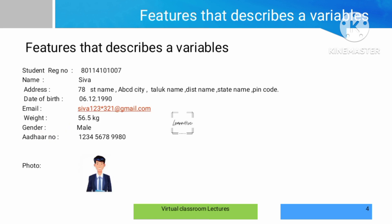Here is a sample dataset. How do you find a particular student's data? The register number is a number, name, address, date of birth — first date, then month, then year — and email. All data is available, every piece of data available in one format. Valid data can be collected.